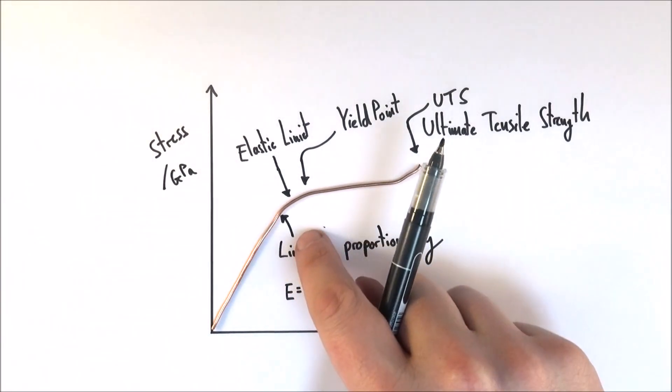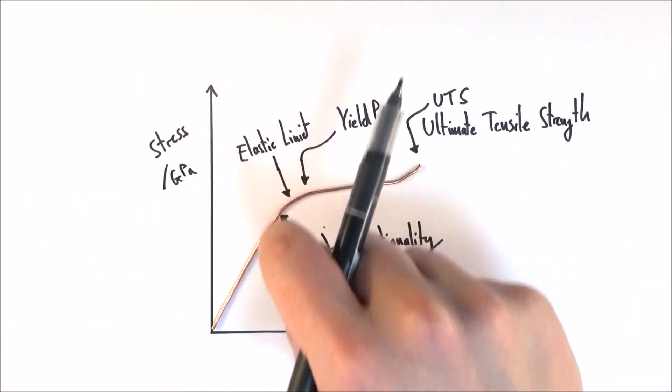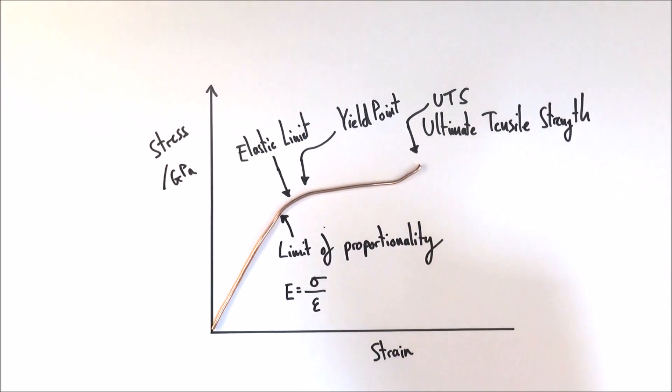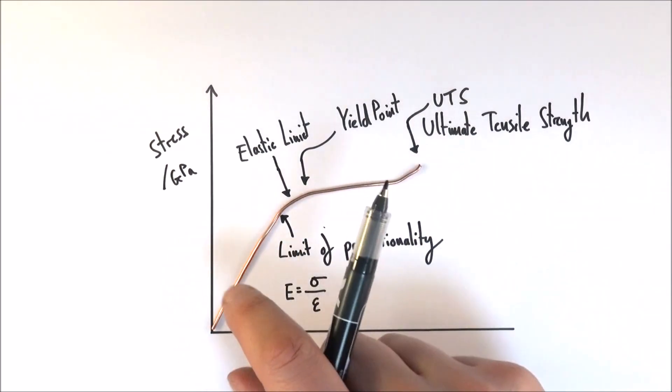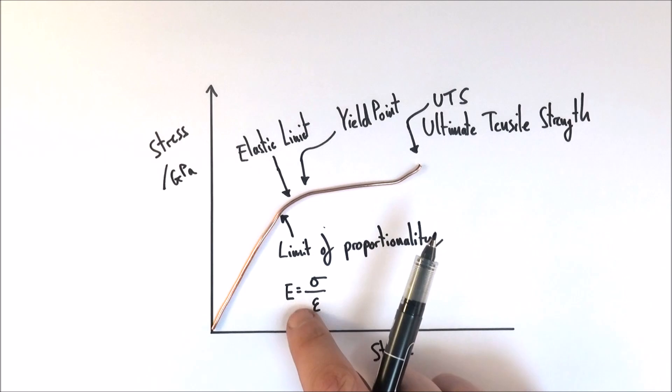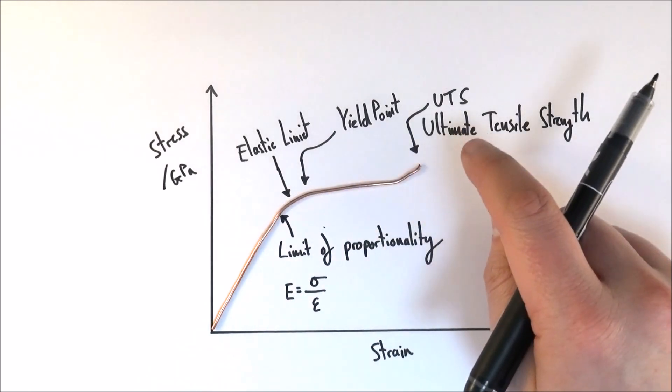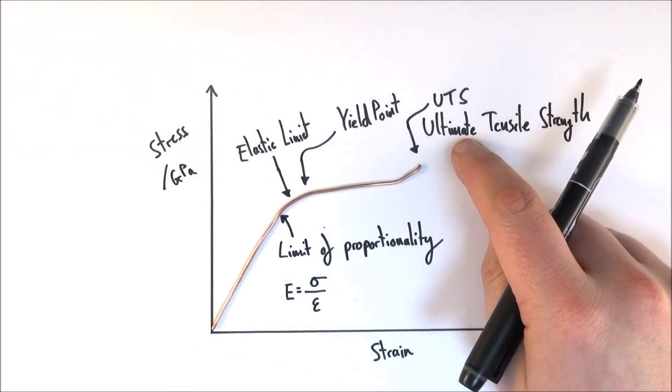Often at A-level, the limit of proportionality and the elastic limit are pretty much the same thing, but the ones that you really need to think about is the region where a material obeys Hooke's law—and we can then work out its Young modulus—or also the point where we get to this ultimate tensile strength at which it fails.